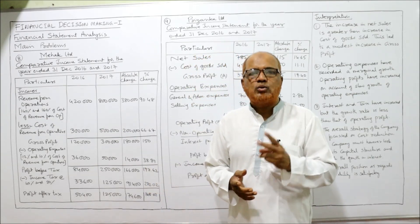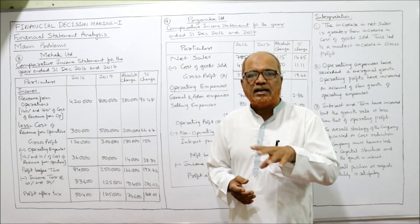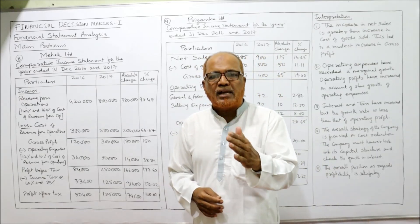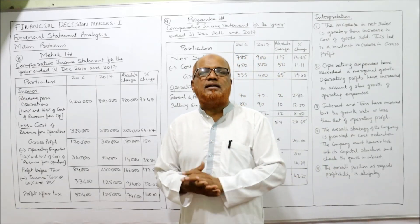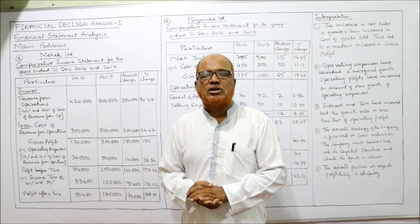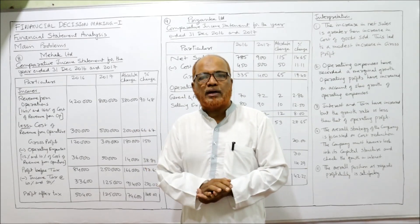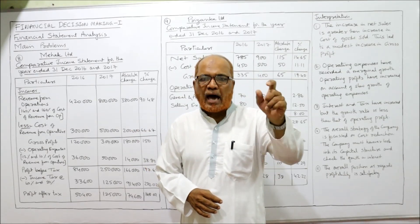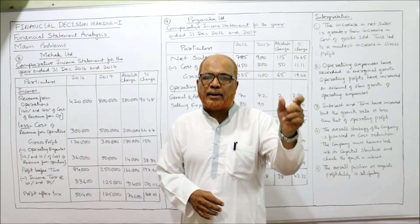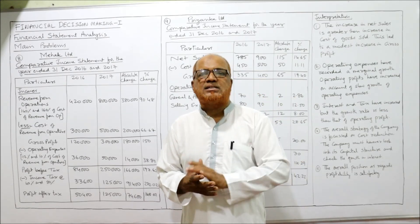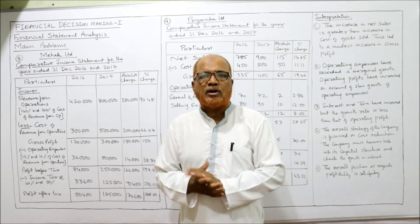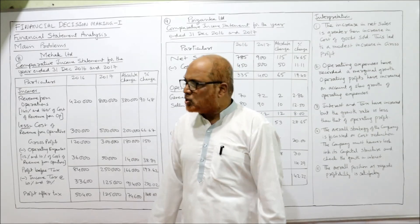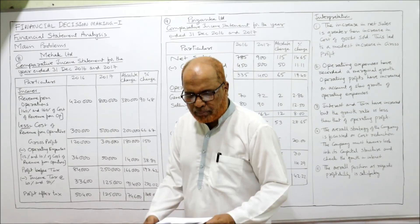In comparative statements we compare two years of data — last year and current year — and then make two more columns: absolute change and percentage change. So totally four columns: last year column, current year column, absolute change column, and percentage change column. This is the format of a comparative income statement.